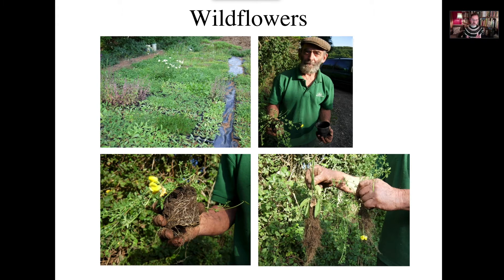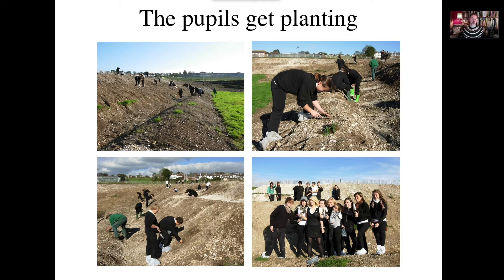He removes the compost and you see the bare roots — that means we don't introduce much alien material to the site. It also means the roots have to push out quickly to get into the chalk soil in order to survive, and that created about a 95% success rate. Here we have 1,700 children all being part of this process — I think that's very important for children to realize they can make a difference on issues like biodiversity loss.